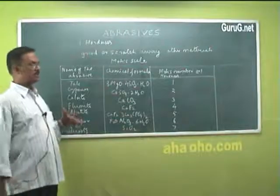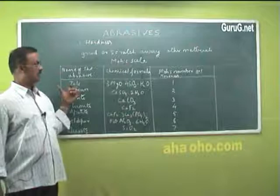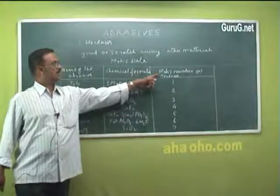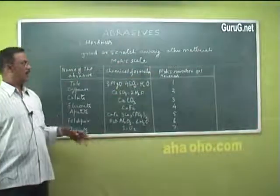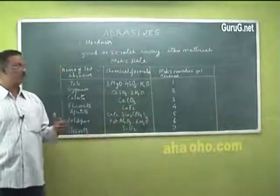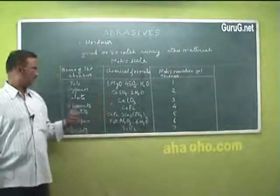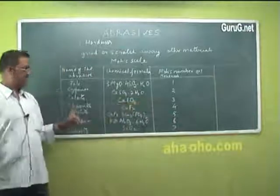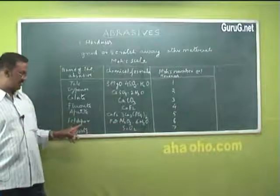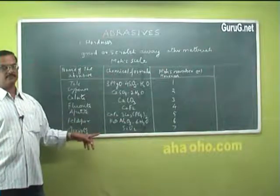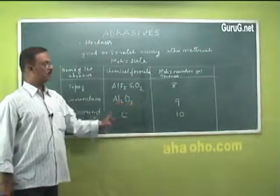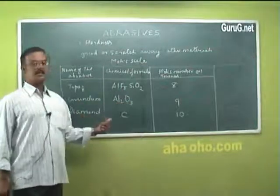The hardness values are arranged as follows. The one having the least hardness is given value 1 in Mohs scale, also known as Mohs number. Talc has Mohs number 1, followed by gypsum with Mohs number 2, calcite with 3, fluorite with 4, apatite with 5, feldspar with 6, quartz with 7, topaz with 8, corundum with 9, and diamond has the highest value of 10.